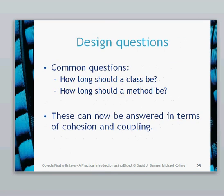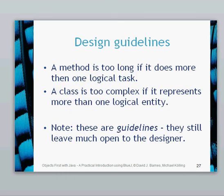So now we can answer design questions like how long should a class or method be, in terms of cohesion and coupling. Some final design guidelines: a method is too long if it does more than one logical task, and a class is too complex if it represents more than one logical entity. These guidelines leave much open to the designer, so talk to your colleagues and lecturers to work out ways of reducing complexity, having loosely coupled classes, and achieving good cohesion. See you next time.